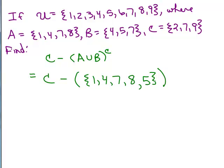All right, so those five elements are A union B. And now I have to take the complement of that. Now I'm going to go ahead and write down what's in C right now. That's two, seven, and nine. And what's the complement of this set, one, four, seven, eight, and five? Everything in the universal set except those five numbers. So what's left?